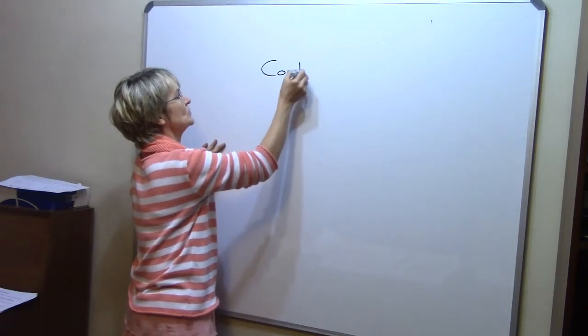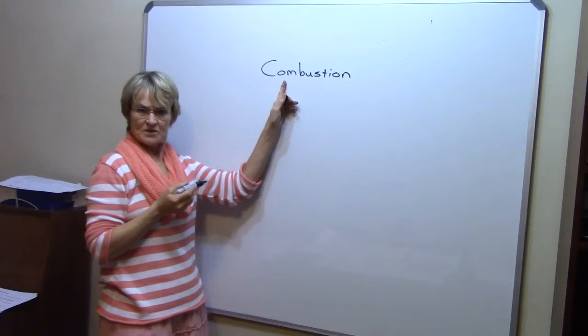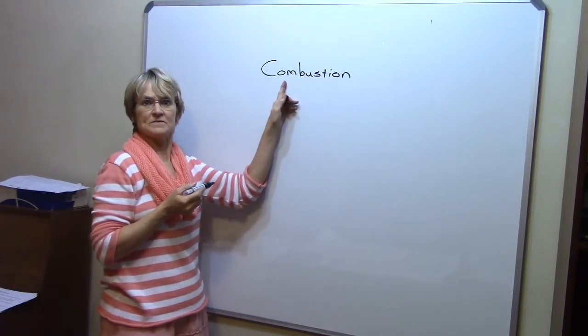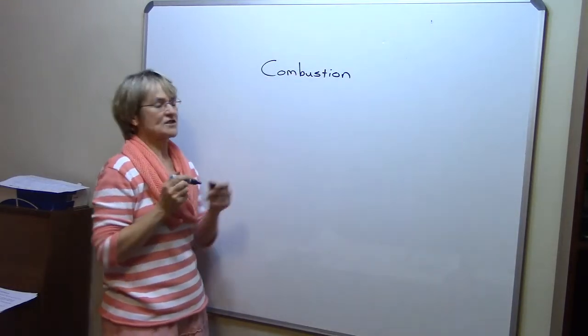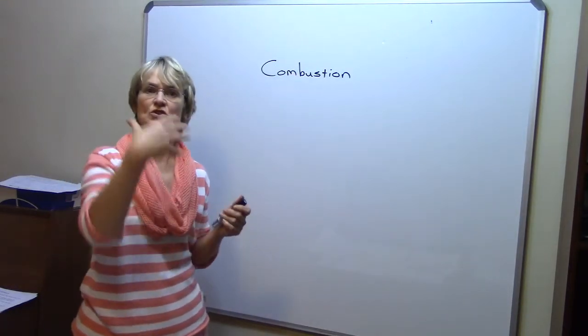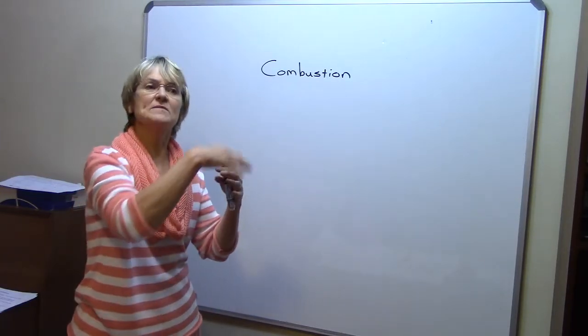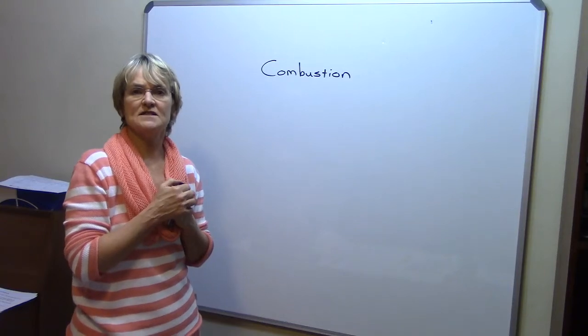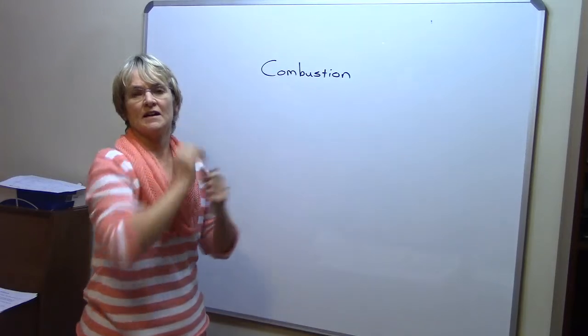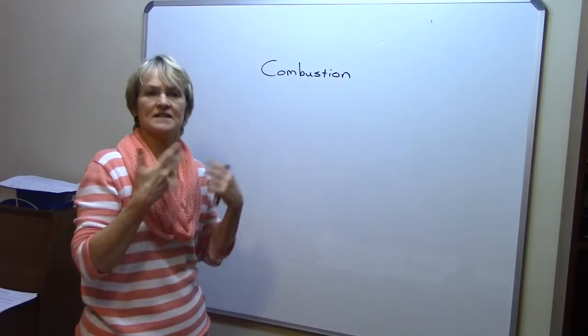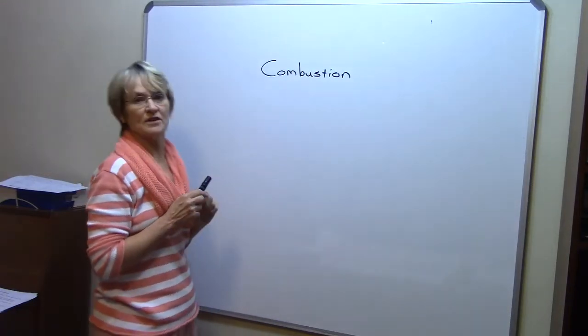Combustion, which we already mentioned for Eskom. What happens during combustion? The coal is burned in oxygen, providing energy. In the case of Eskom, that energy heats water in boilers. The steam that is created turns turbines, and those turbines work like generators producing electricity. That's the combustion process.